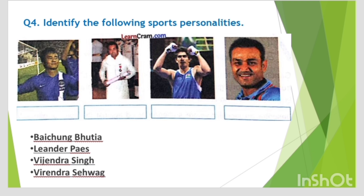Question number four: identify the following sports personalities. The first photo is Baichung Bhutia, second is Leander Paes, third is Vijender Singh, fourth is Virender Sehwag.